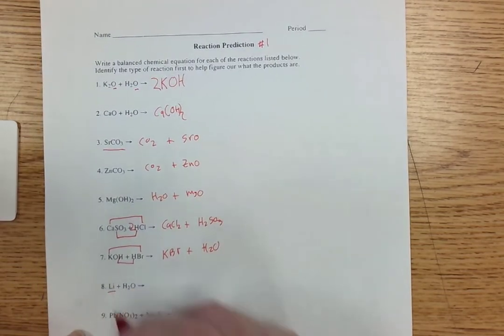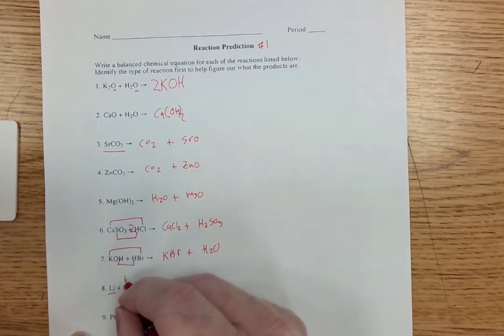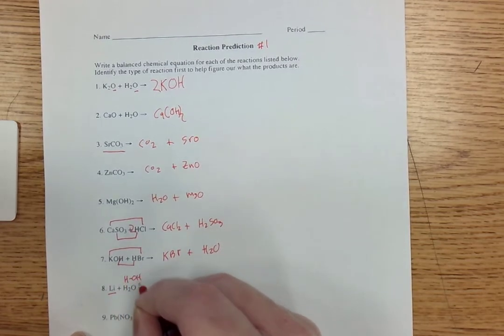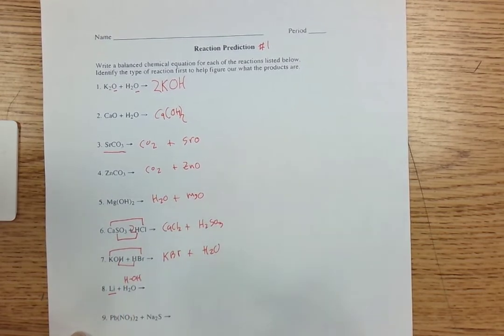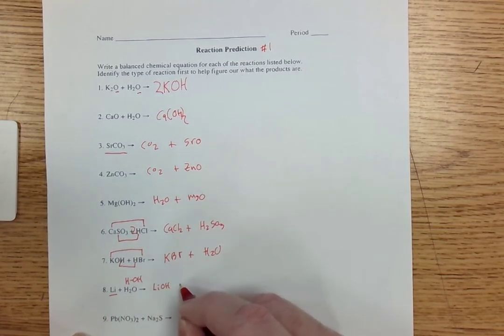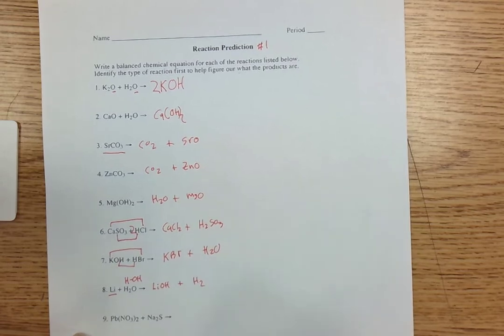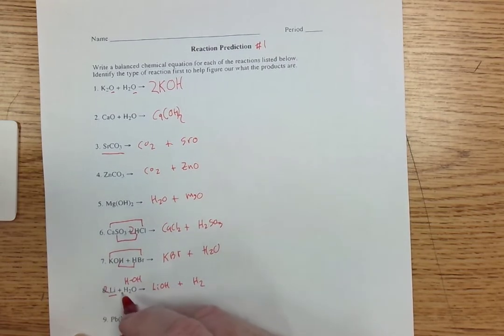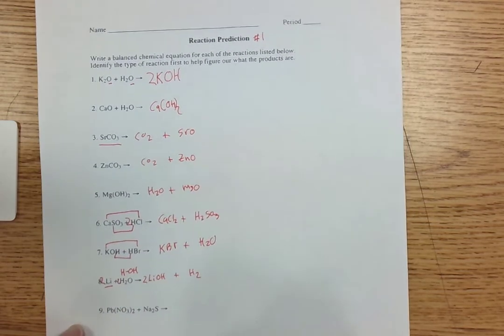Now here, I spot a single. So I'm going to rewrite water as HOH so that the Li can kick out the hydrogen and make LiOH and hydrogen gas H2. We balance it with a two, a two, and a two.